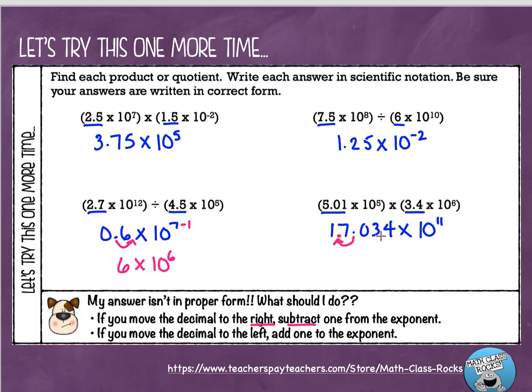So I've got to take this decimal point and swoop it over here to the left once. If this is getting smaller, if my coefficient is getting smaller, then my exponent needs to get bigger, right? So that's our second rule. If you move the decimal to the left, then you're going to add one to the exponent, right? So since I move this to the left, I have to add one. So it's going to be 1.7034 times 10 to the 12th power is going to be our answer.